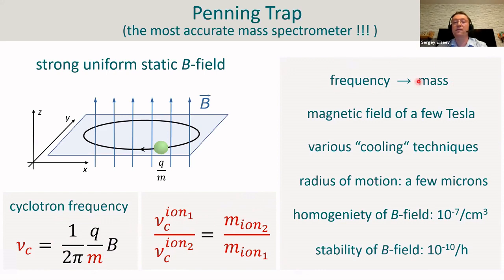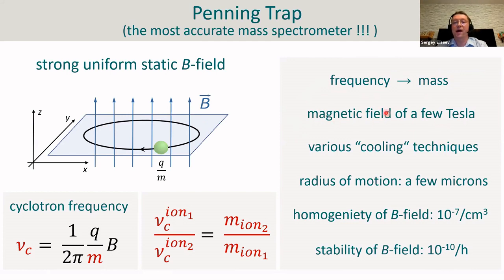The major factors making the Penning trap the most accurate mass spectrometer are: first, the nuclid's mass is determined by measuring its free cyclotron frequency — a physical quantity measurable very precisely. Second, the confinement volume of ion motion can be very small. The confinement volume depends on the magnetic field strength and the ion's kinetic energy. By using very strong magnetic fields of several Tesla and applying ion motion cooling techniques, one can reduce the amplitudes of ion motions in the trap to a few microns or below, while creating very strong, homogeneous, and stable magnetic fields.